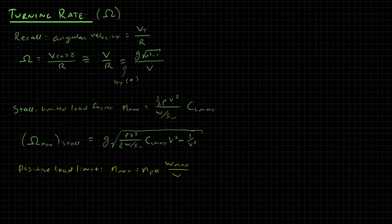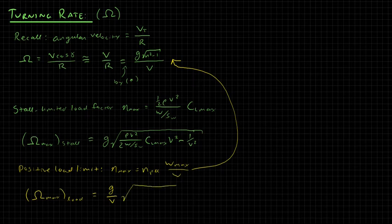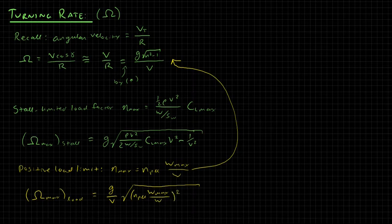So if we plug that in now, we're going to come back up into this equation here, and what we get is omega max. We're going to call this the load limited maximum turning rate, is going to be G divided by V times root N PLL W max over W quantity squared minus 1.